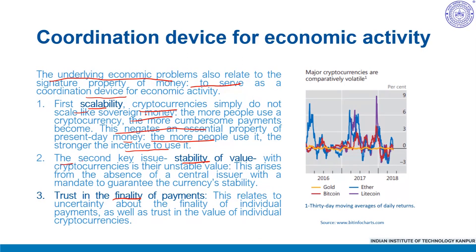The second issue is stability of value. With cryptocurrencies, their values are unstable in nature. This arises from the absence of a central authority with a mandate to guarantee the currency is stable. Well-run central banks succeed in stabilizing the domestic value of their sovereign currency by adjusting the supply of means of payment in line with transaction demand — at high frequency, during times of market stress and during normal times. In contrast, a cryptocurrency's supply is determined by a protocol to prevent debasement, which prevents it from being elastic. Therefore, any fluctuation in demand translates into changes in valuation, making cryptocurrency valuations extremely volatile.